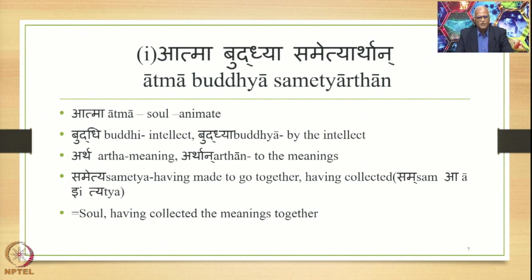The first stage is Atma buddhya Sametya Arthana. There are four words in this particular line. Atma means soul, and the important property of this soul is that it is animate. Then we have buddhya, in which the main word is buddhi, which means the intellect, and buddhya means 'by the intellect.' Arthana stands for meaning, and Arthana is the dvitiya referring to the meanings.